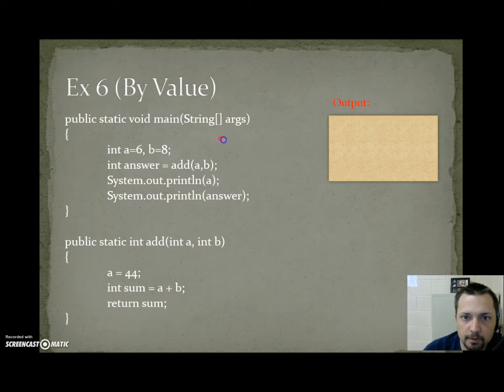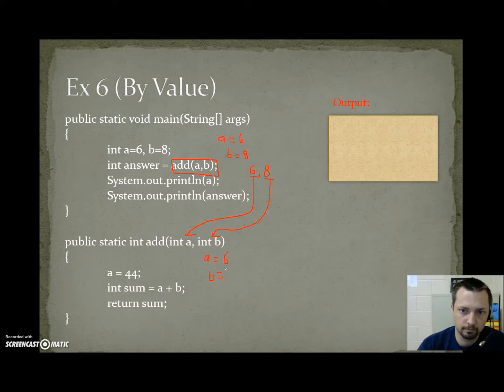All right. By value. a equals 6, b equals 8. We call the method add a comma b. We're sending the value of 6 comma the value 8. 6 goes to a, 8 goes to b, just like in main. But these are different variables. a is equal to 6, b is equal to 8. Then we change a to 44. a now holds the value 44. 44 plus 8 is 52.